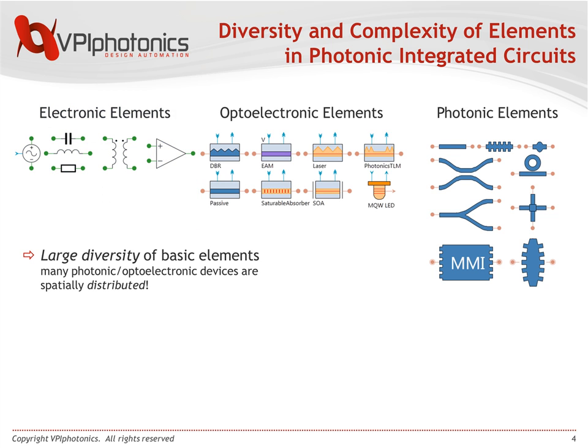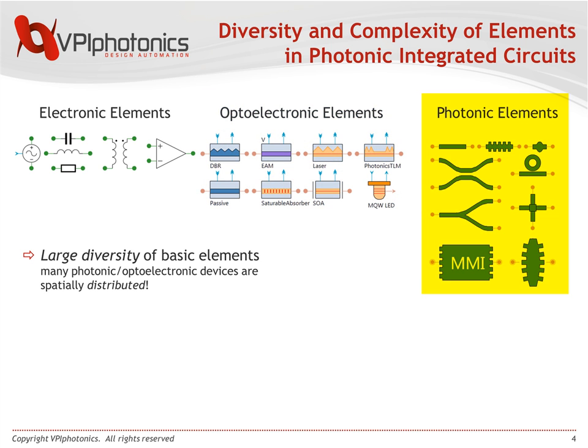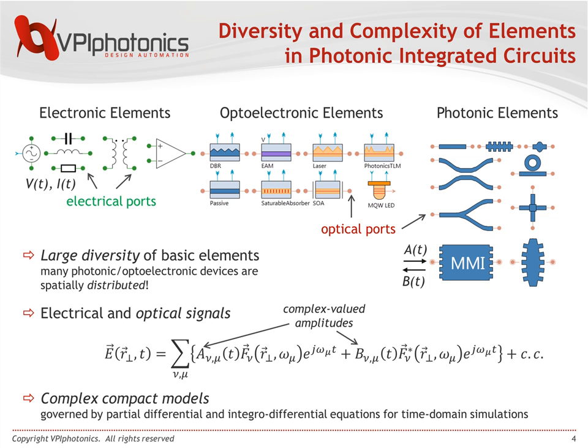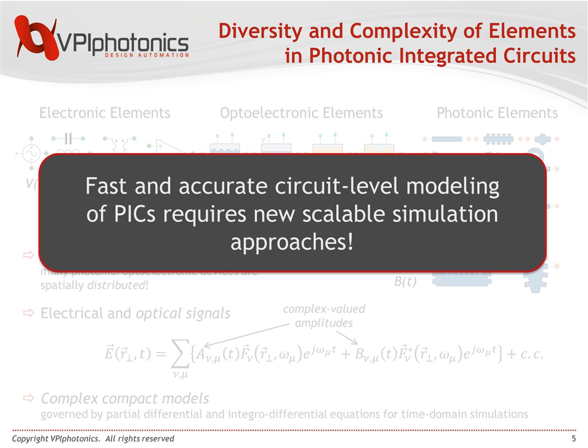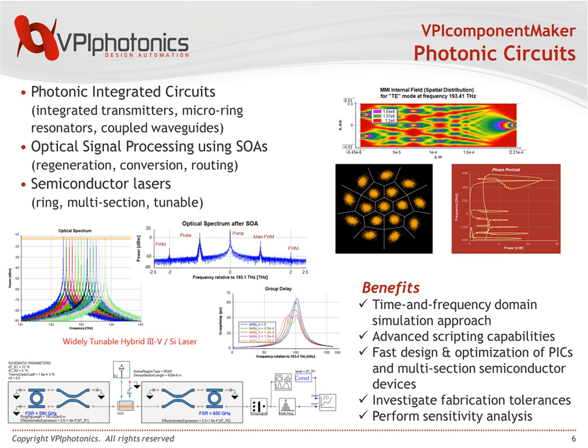We have a pretty diverse set of very complex basic building blocks — active electronic elements, passive ones — they are all very different and they sometimes have very complex and compact models. The other problem is that we have different types of signals. Besides the electrical signal, we also have optical signals, and they should be regarded in the forward and backward direction. In order to combine all this, you need a fast, accurate way of performing circuit modeling, and you need new scalable approaches.